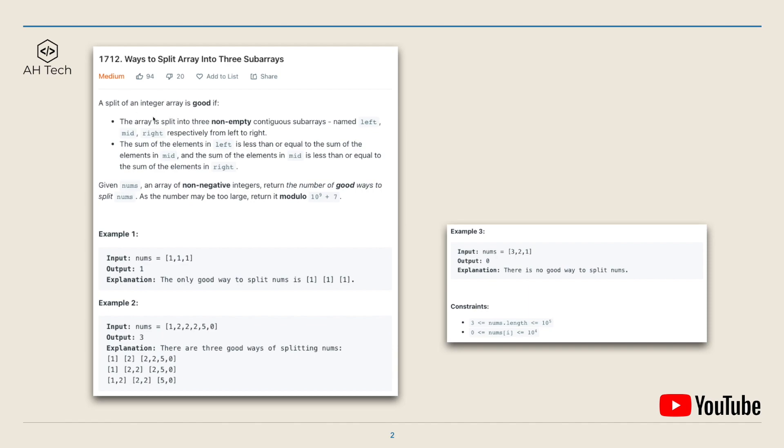We are given an integer array. A split of an integer array is good if the array can be split into three non-empty continuous subarrays called left, mid, and right. The sum of elements in the left subarray should be less than or equal to the sum of the median subarray, and the sum of the median subarray should be less than or equal to the sum of elements in the right subarray.